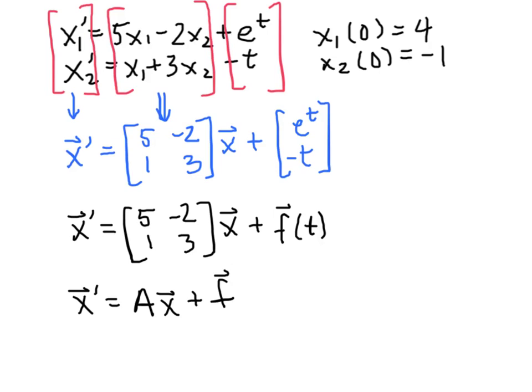And we can leave the t off if we want, as long as we understand what the independent variable is. So that is the vector form of our system of equations, where f is the vector above with the e^t and the -t in it. A is the matrix, x is our vector of unknown functions.